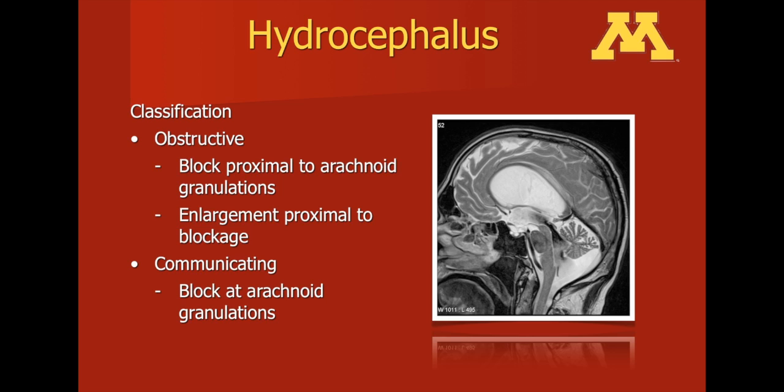Communicating hydrocephalus is when there is abnormal absorption. Because the problem is distal to the subarachnoid space, cerebrospinal fluid will build up within the entire ventricular system. In particular, the lateral ventricles are seen enlarged, as is the fourth ventricle, but also the subarachnoid space, which is seen around the cerebellum.